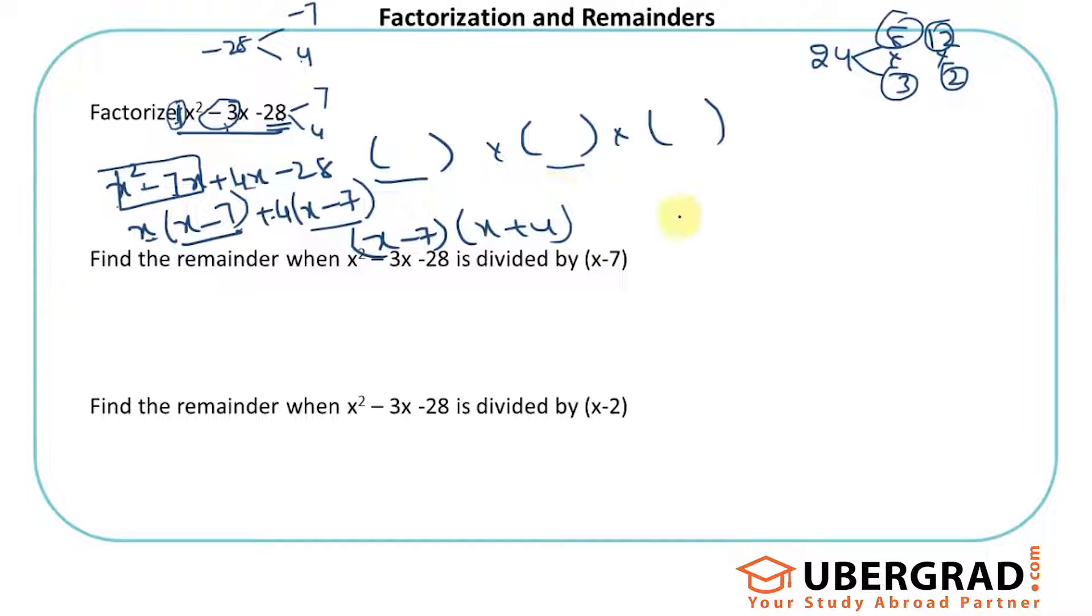That's how you do for a quadratic. Slightly higher powers could also be done in a similar way. But what's the remainder when x² - 3x - 28 is divided by x - 7?